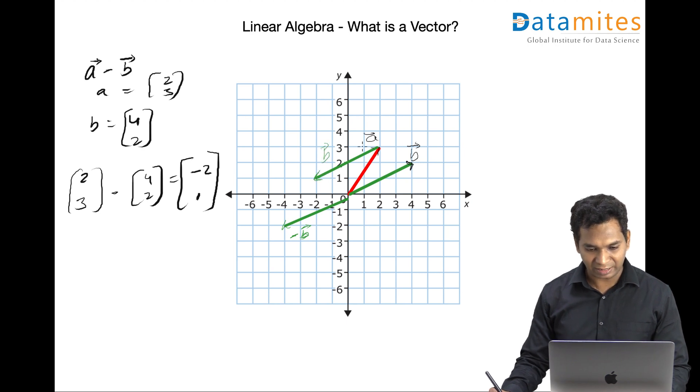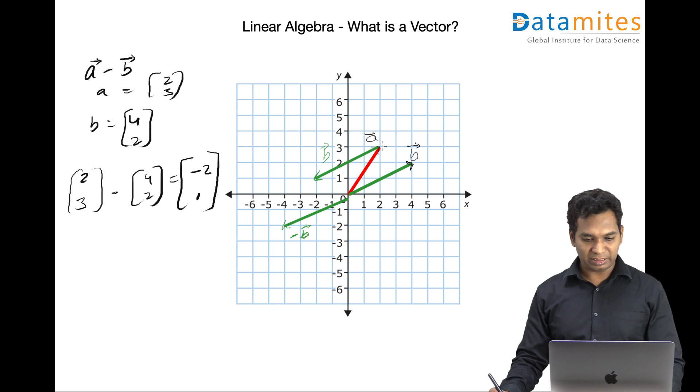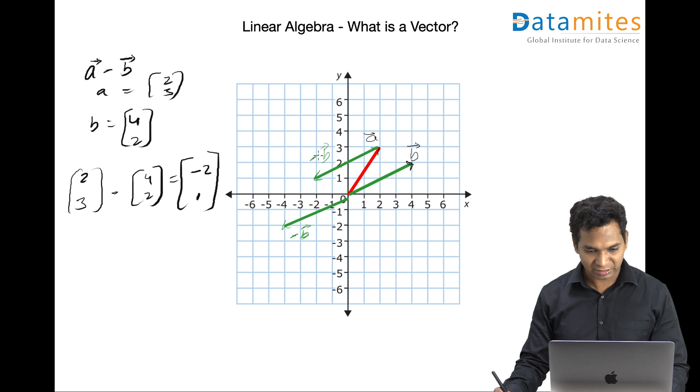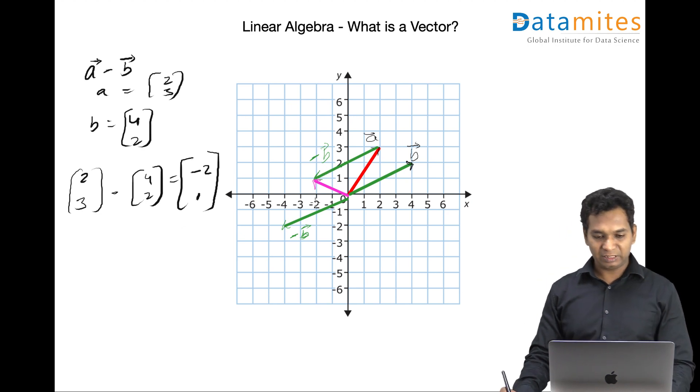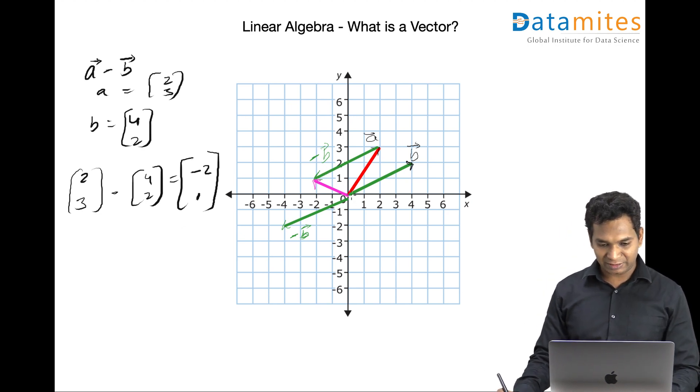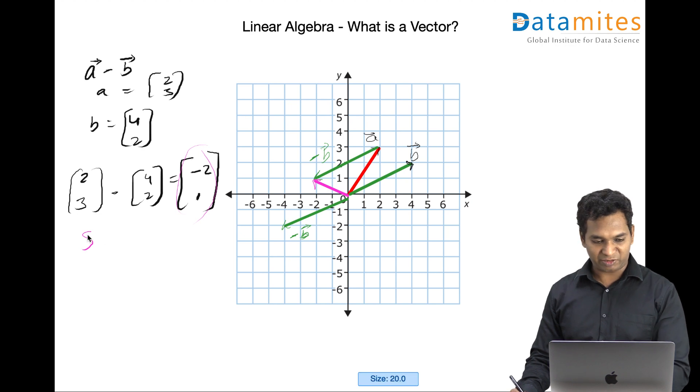So that's actually minus b positioned at the tail of a, so that it becomes the matrix addition. So adding this, the end of this b, which is reverse b actually, minus b to be correct. So this will be your resultant of this subtraction. And that's pretty straightforward to see that it's minus two and one, which is exactly same as this. So this is your subtraction, matrix subtraction.